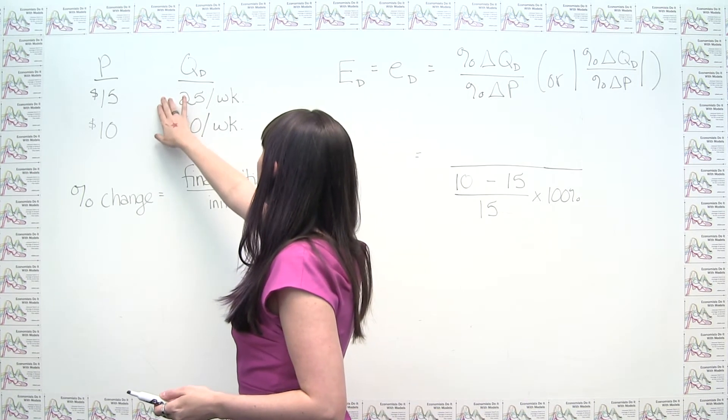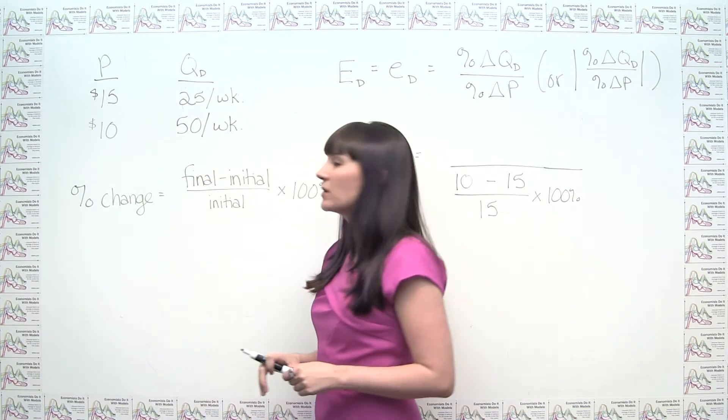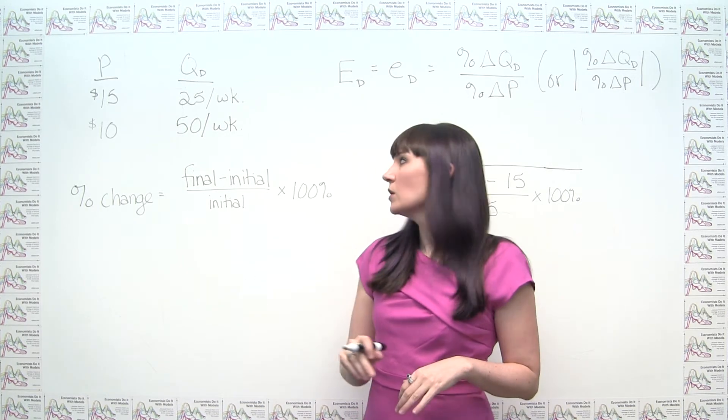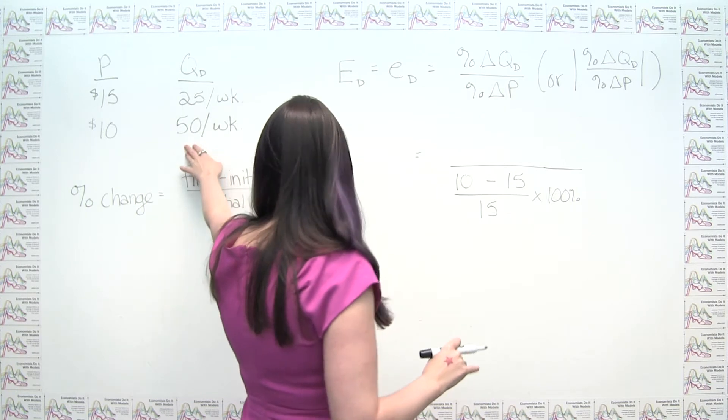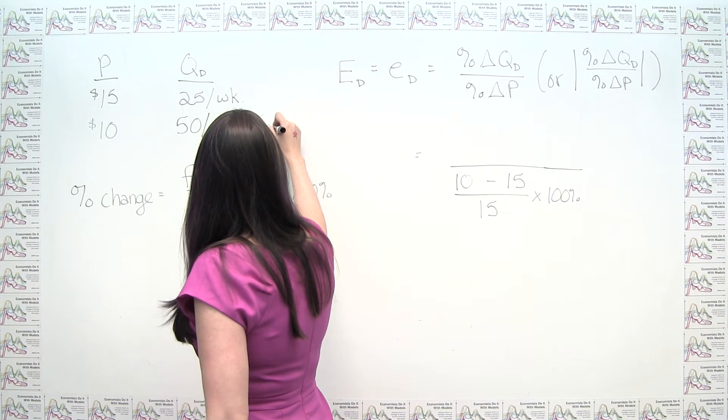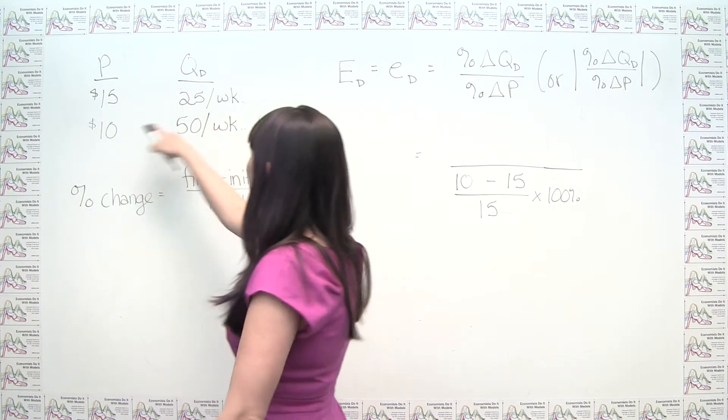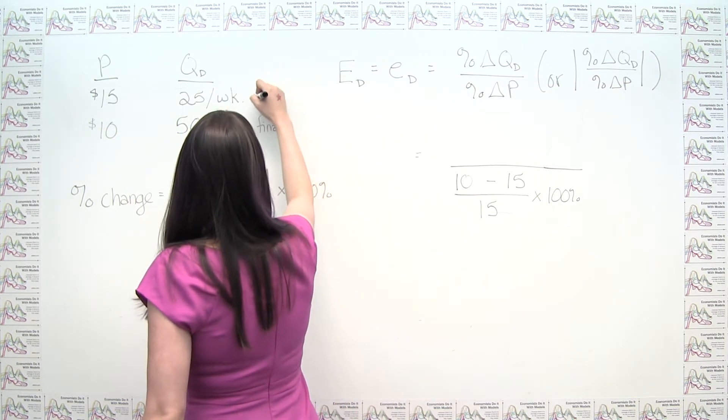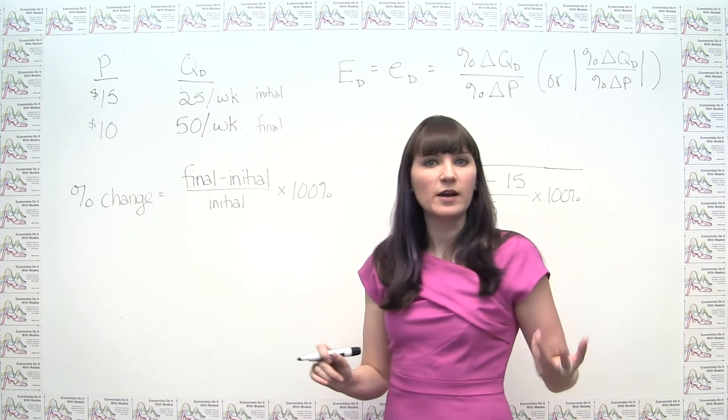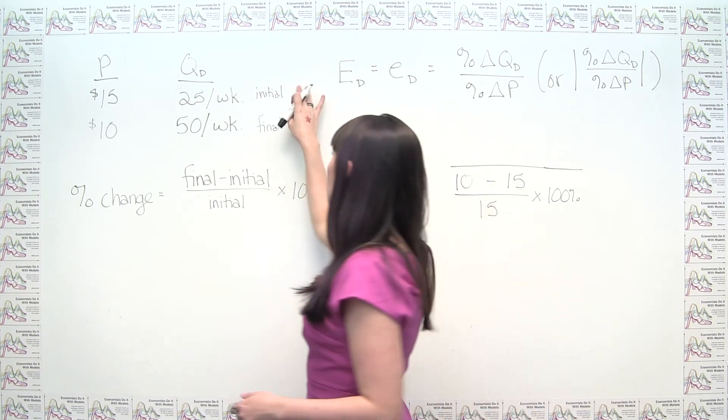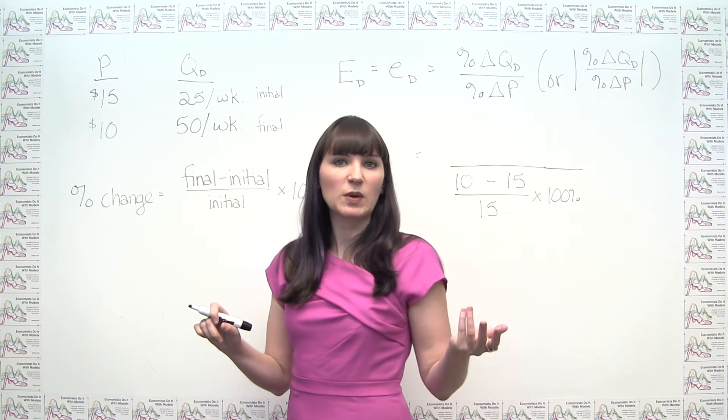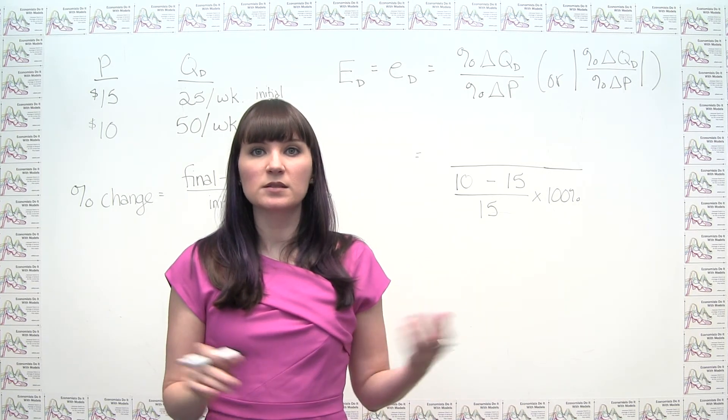Similarly, we could say our quantity demanded went from 25 to 50. Now, if you're good with numbers in your head, you can see that this is a 100% increase. But let's see why that works. So here, make sure you're going in the same direction, that this is always going to be final, whether we're talking about quantity or price. And this is always going to be initial, the way that we've defined it in the problem. And this is just important to make sure that we get a sign on the number that's consistent with what we were expecting. In this case, we're expecting price elasticity of demand to be a negative number.